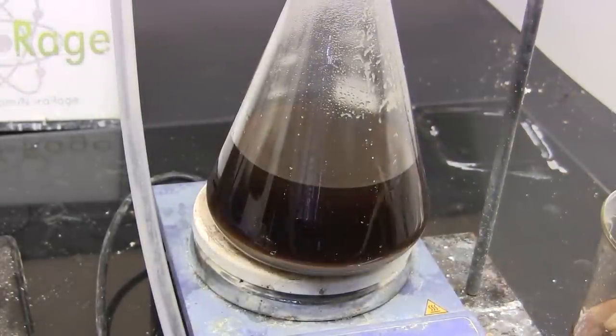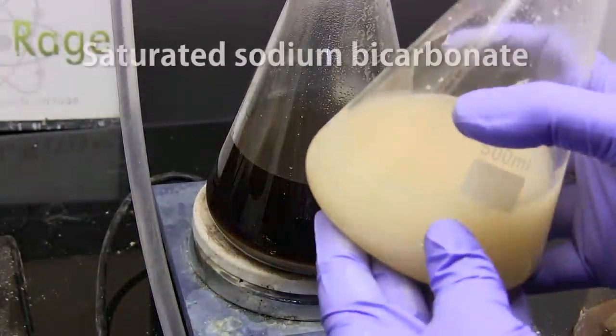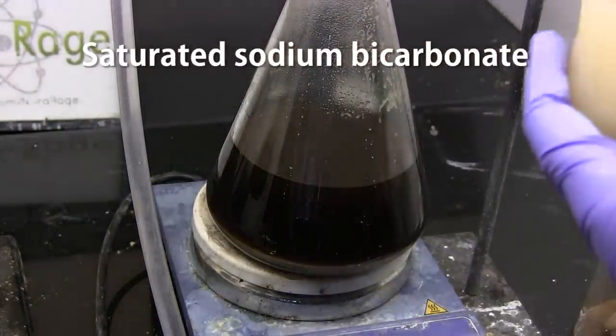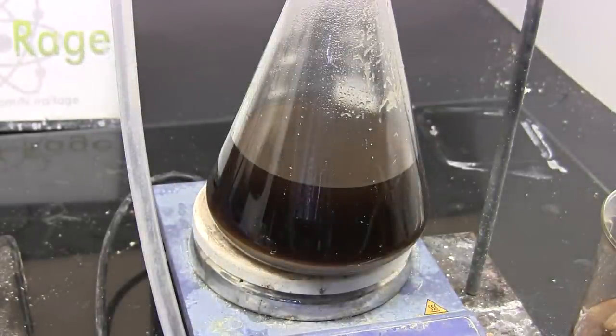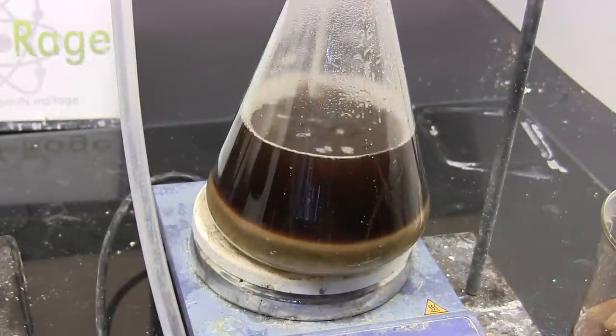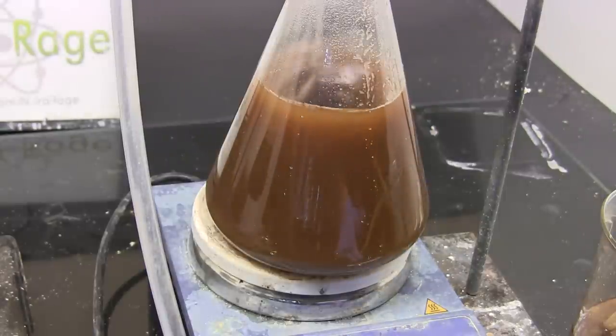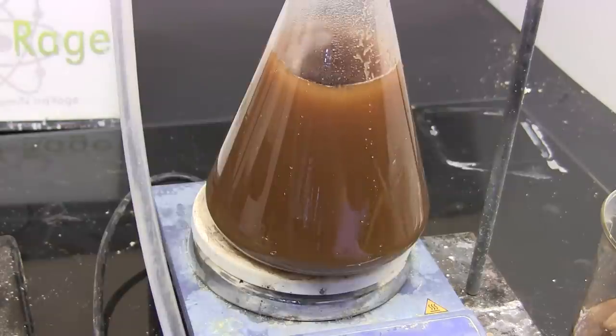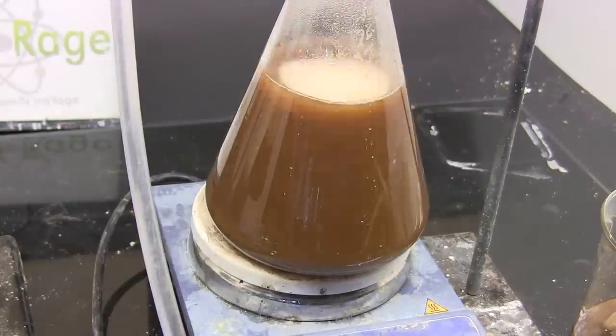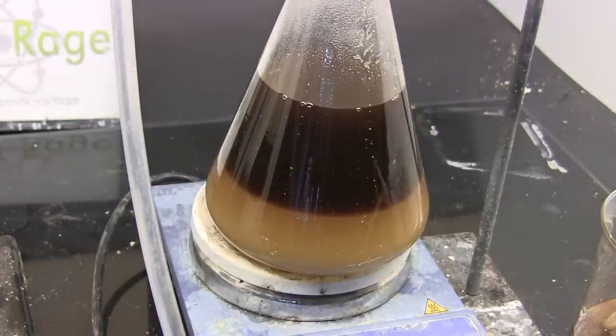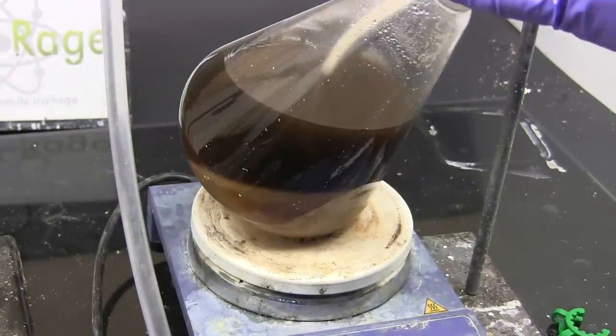Here we are after most of the aqueous layer has been removed. At this point we now add a saturated solution of sodium bicarbonate, also known as baking soda. The amount you should add should bring the total solution volume to one liter again. What we're doing here is using the alkaline sodium bicarbonate to neutralize any remaining hydrogen chloride. The hydrogen chloride must be removed to make the subsequent distillation easier. Now once again we remove the aqueous layer by siphoning.